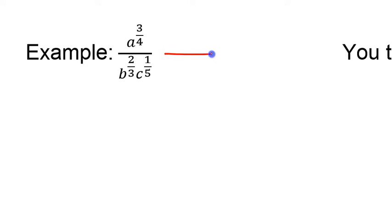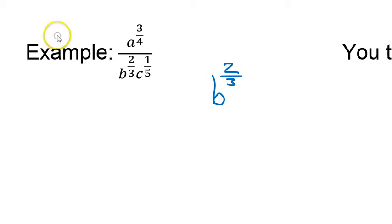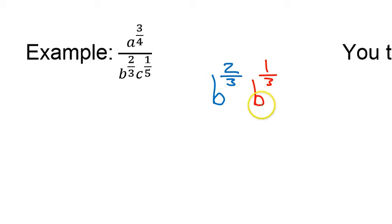You need to multiply by some version of the number 1. For example, if I multiplied by b over b, that wouldn't change anything because b over b has a value of 1. Looking at b to the 2/3 power, what could I multiply by that would cancel out the fraction — so I wouldn't have any more exponent there? What about b to the 1/3 power? Remember, when you multiply bases, you add the exponents.